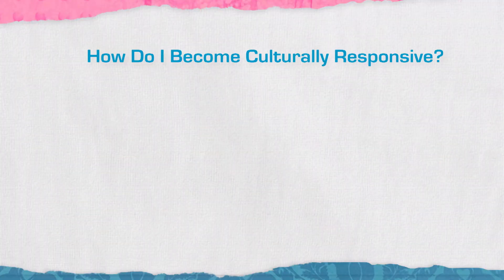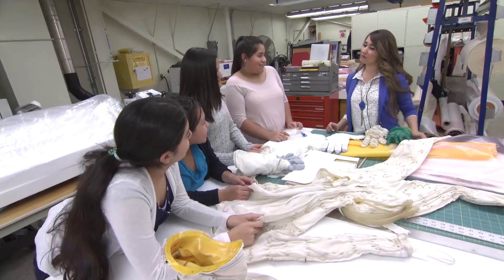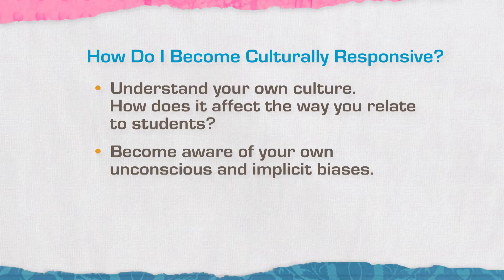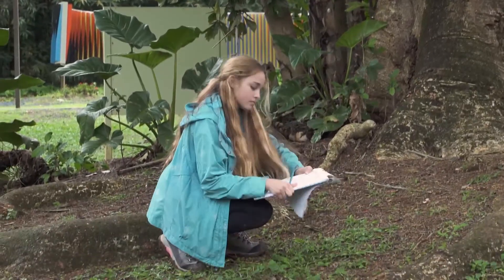How do we become culturally responsive? The first step to becoming a culturally responsive teacher is to understand your own culture and how it affects the way you are. As teachers, we often believe that we can be objective and neutral, but we all bring our life experiences, cultures, values, and beliefs into the classroom. These assumptions are not necessarily bad, but when they manifest as hidden or implicit biases, they could have a negative impact on students. We all have implicit biases, which refer to attitudes or stereotypes that affect our understanding, actions, and decisions in an unconscious way.